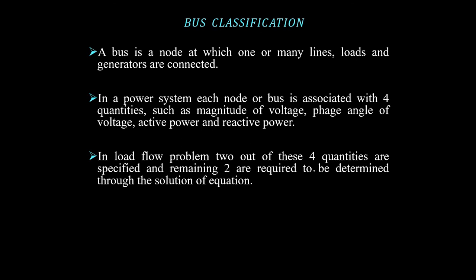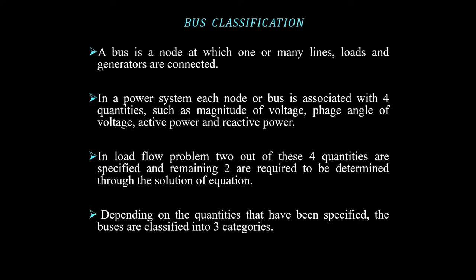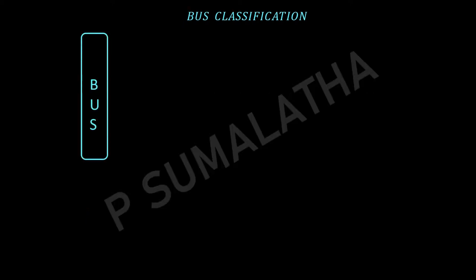Out of these four quantities — real power, reactive power, voltage magnitude, and phase angle — we will be knowing only two quantities; the remaining two quantities will be unknown to us, and those we need to find out. Depending upon the quantities specified at each bus, these buses are classified into three categories. Majorly, the buses are classified into only two categories, but we will see why we have a third one. The buses are represented in three different categories.